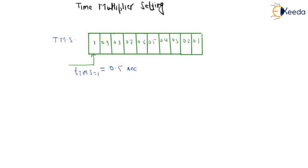Let us assume we have TMS equal to 1 given at 0.5 seconds. It means when TMS is equal to 1, the operating time is 0.5 seconds.